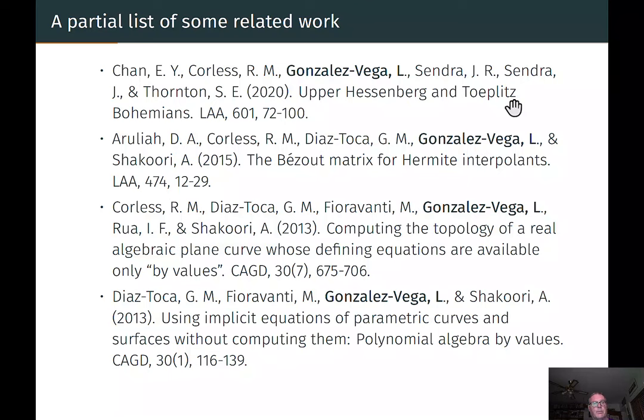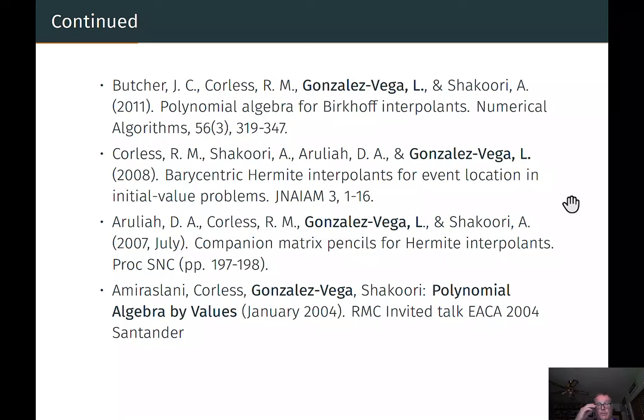A couple of previous papers in the journal Computer-Aided Geometric Design are relevant to this idea of representing a polynomial not in the standard monomial basis, but using instead its values. Our paper with John Butcher attacked a more general problem, Birkhoff interpolation, and this is useful for numerical solution of differential equations. Before that, we had work on barycentric Hermite interpolates for event location in initial value problems for ordinary differential equations.